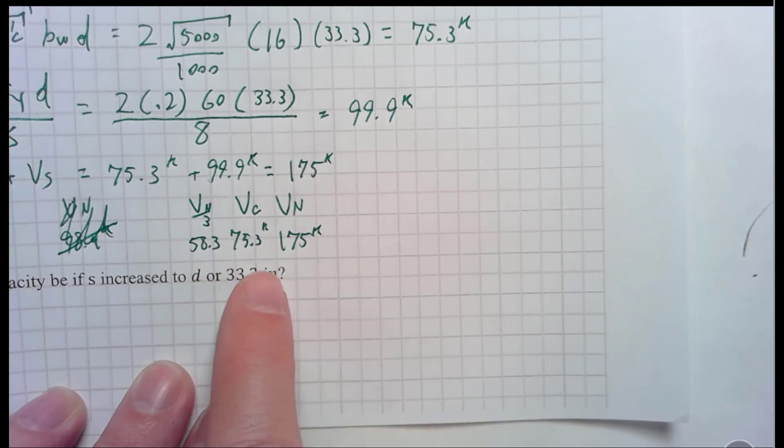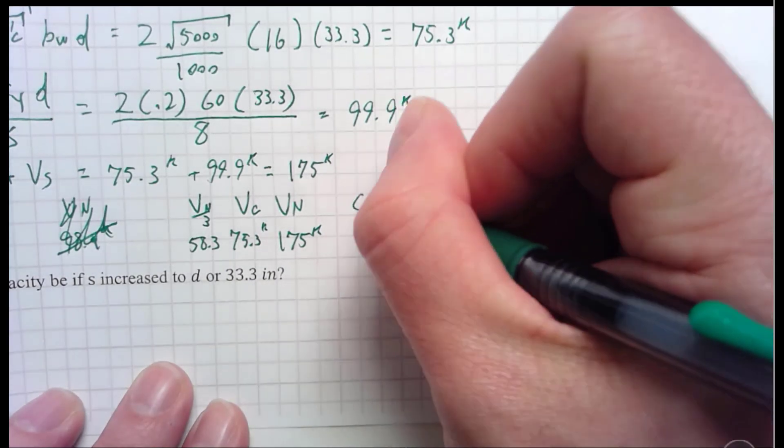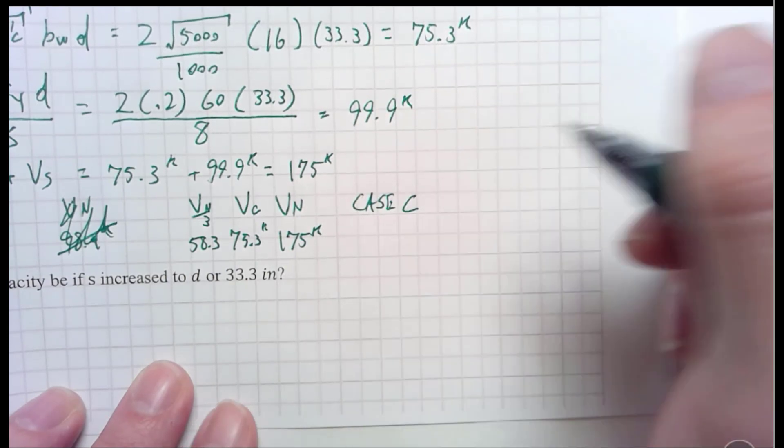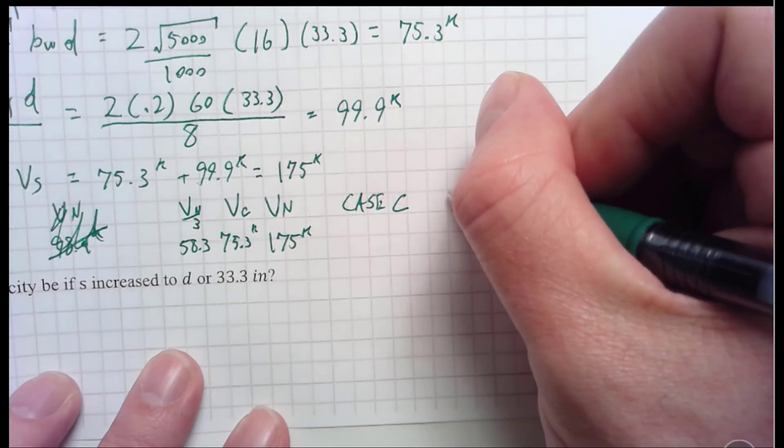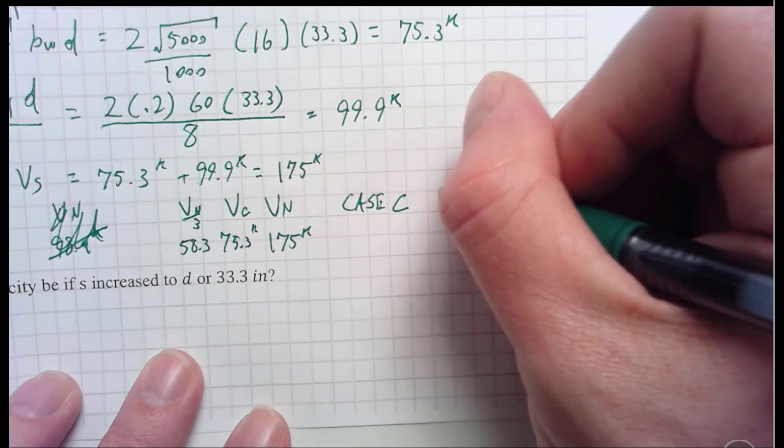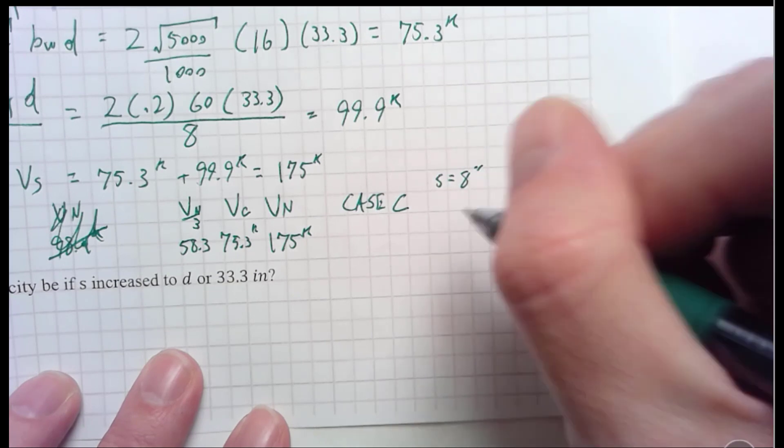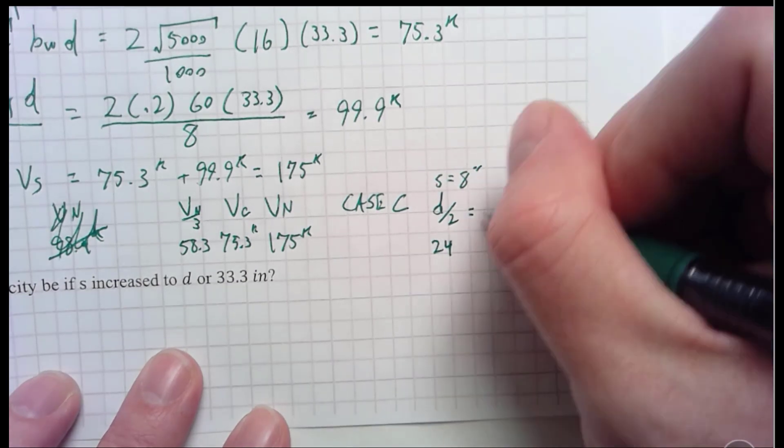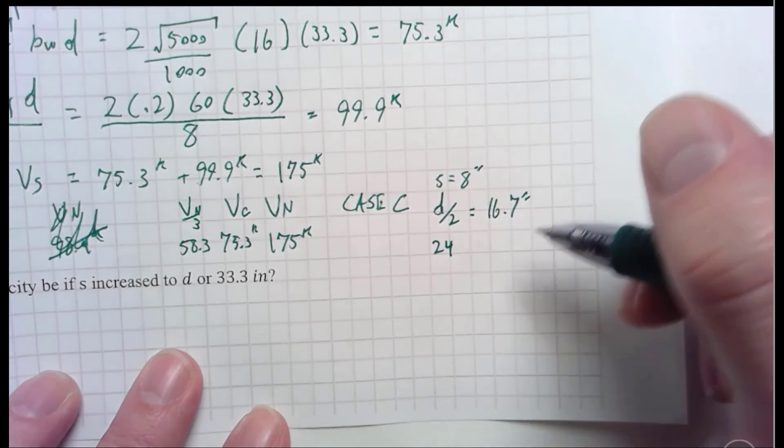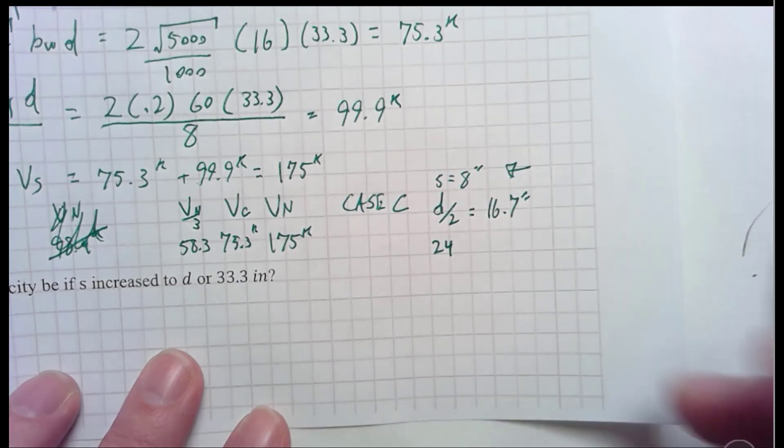Now, why am I picking these three? Because this is the bounds. This is what bounds zone C. And I can see I'm somewhere between V sub N and V N over 3. Therefore, I am in case C or zone C. And therefore, in zone C, I get to use my calculated stirrup spacing, which happens to be 8 inches in this problem. S equals 8 inches. Or I will also compare it to d over 2 or 24 inches. And d over 2 happens to be 16.7 inches. And I picked the smaller of these three. So I'm okay. Everything is good. And I'm almost done.